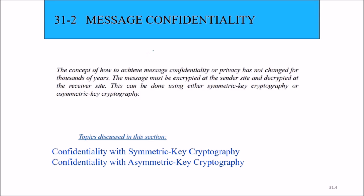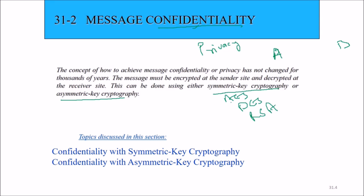First, we'll start with message confidentiality. Confidentiality can also be understood in terms of privacy. Privacy or confidentiality has not changed for thousands of years — we have the Caesar cipher from the era of Julius Caesar. The message must be encrypted at the sender side, say Alice, and decrypted at the receiver side, say Bob. This can be done using symmetric key cryptography or asymmetric key cryptography. We have seen various algorithms like AES, DES, and RSA.